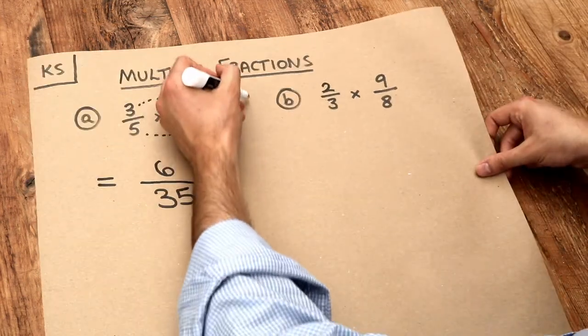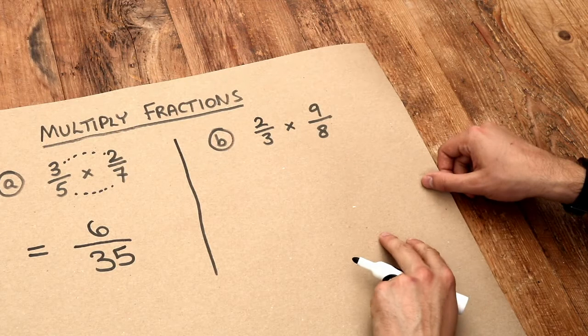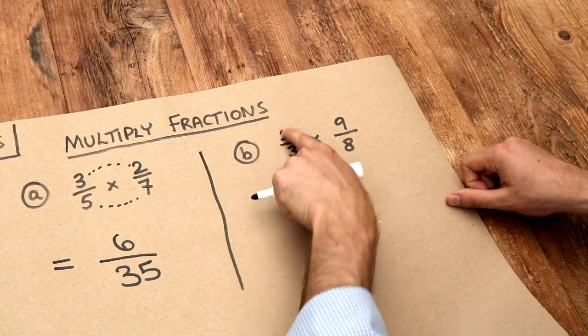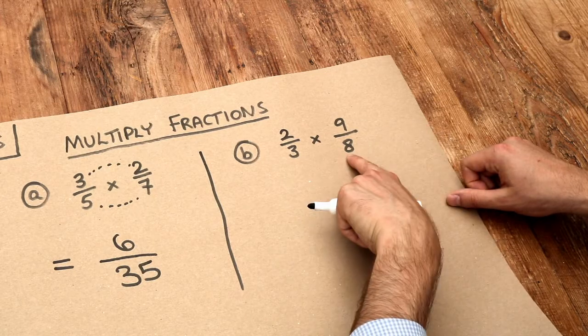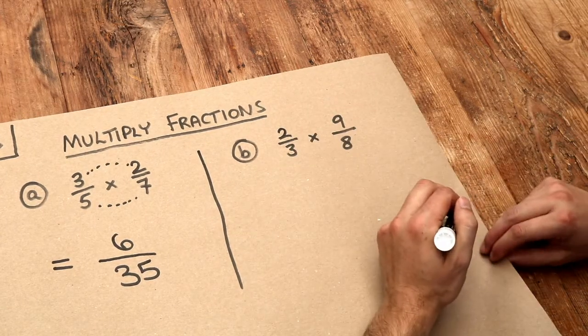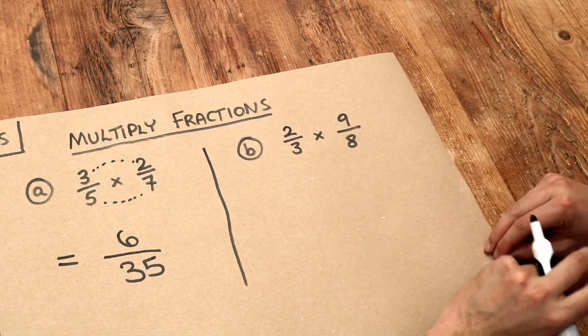Now for the second one, we can use a slightly more advanced method, and this is called cross-cancelling. Now we could just again do the 2 times the 9 to give 18, and the 3 times 8 to give 24. But then we would have to subsequently simplify the fraction. But we can actually simplify before we start multiplying.